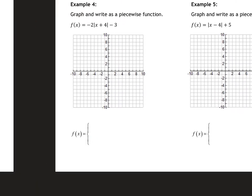Now let's graph and write a piecewise function, tying everything together with absolute values. For this one, my vertex is at (negative 4, negative 3), my right-side slope is negative 2, and my left-side slope is positive 2. Your a-term is your right-side slope, and the opposite gives your left-side slope. Starting at (negative 4, negative 3), right one down two, right one down two — and go left one down two for symmetry. There's your sketch.